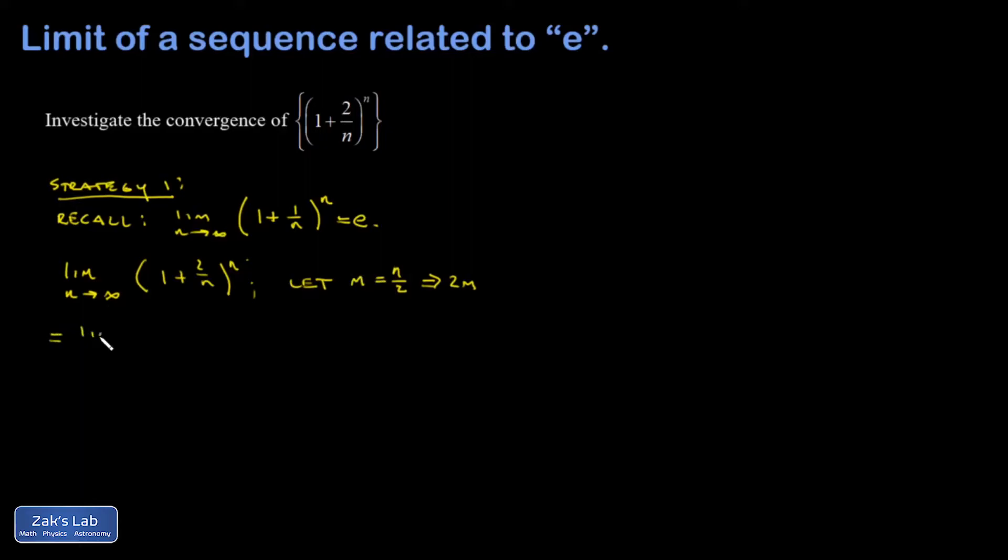So I've transformed this thing. The limit as m goes to infinity, one plus two over n. Well, that's just one over m. That was the point of my substitution. I'm trying to fit this form. It gives me the number e. And then the exponent n is now 2m.